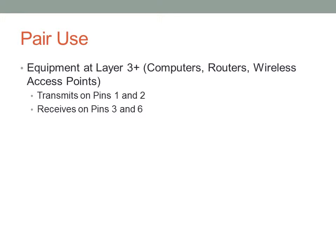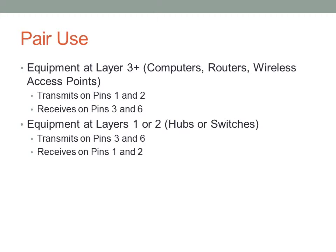Here's the idea behind pair use. Equipment at Layer 3 and above — what I call transmit devices — are devices used to originate packets. These devices transmit on pins 1 and 2 and receive on pins 3 and 6. If you want to connect these devices to a switch or hub, the device on the other end needs to receive on pins 1 and 2 and transmit on pins 3 and 6, otherwise you wouldn't be able to communicate. Equipment on Layers 1 or 2 switches the transmitting and receiving pairs — so the router transmits on pins 1 and 2 and the switch receives on pins 1 and 2, which makes sense.